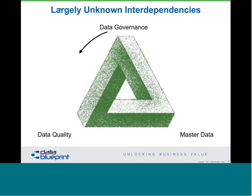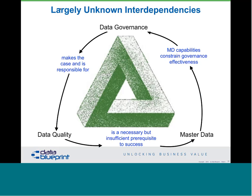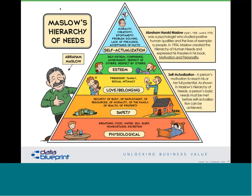These interdependencies are largely unknown. Governance makes the case for and is responsible for implementing data quality, which is a necessary but insufficient prerequisite to success of the master data initiative. The MDM capabilities help to constrain governance effectiveness around that process. What we're trying to say to organizations is: don't buy expensive, complex technology unless you have the stomach for learning how to use it. Crawl, walk, and run is the way it's usually articulated.